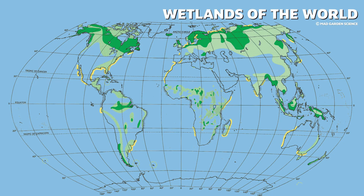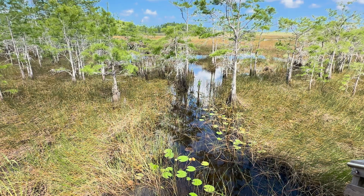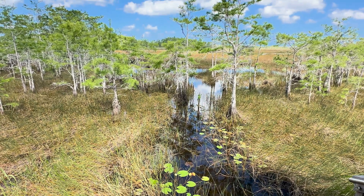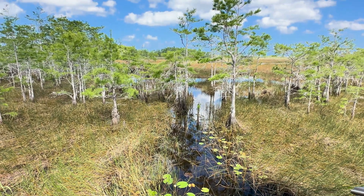A biome is a region defined by a specific climate and the plants and animals who have adapted to live there. Wetlands are unique. They can be found from the equator to the polar regions and, unlike other biomes, are much less influenced by climate. The presence of shallow, undisturbed water is really the determining factor — which makes sense: wet land.